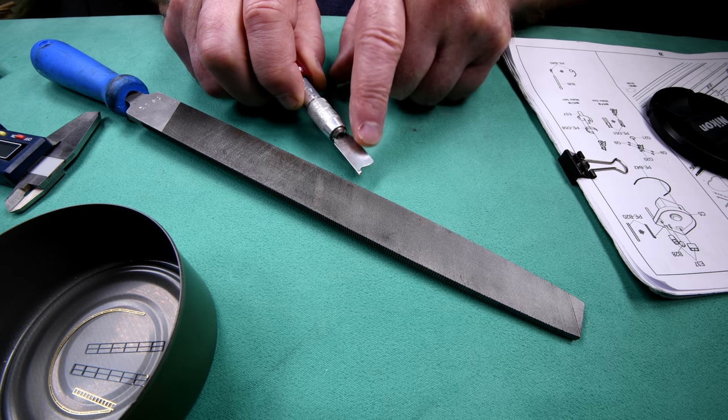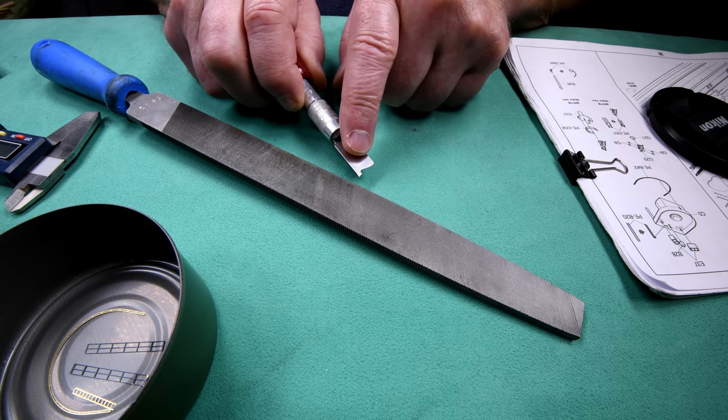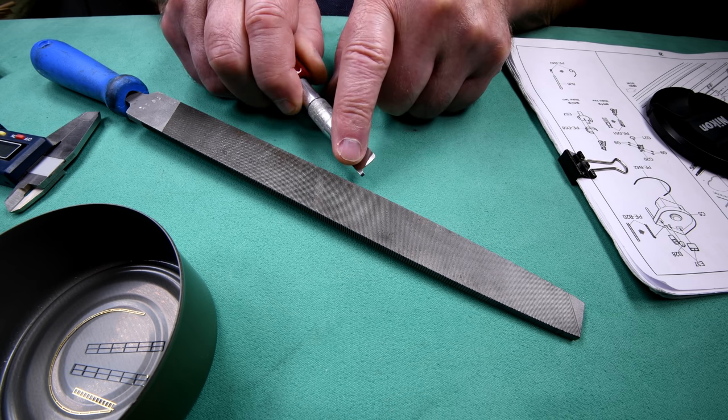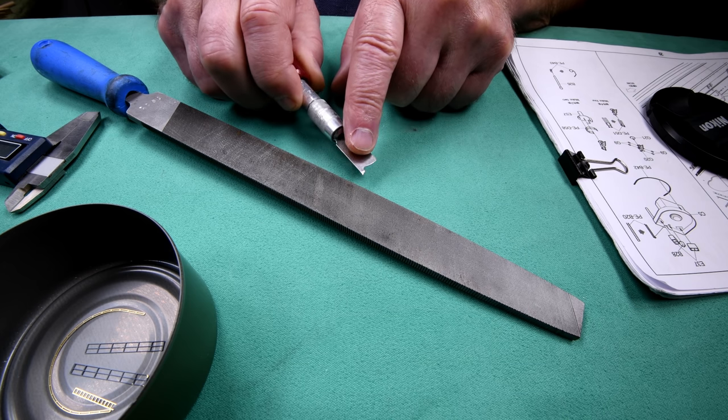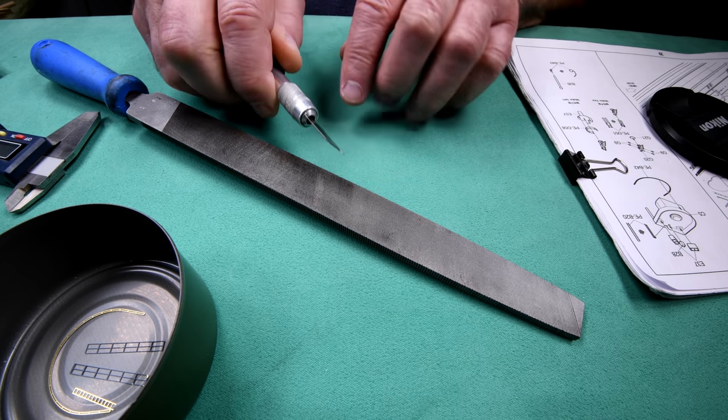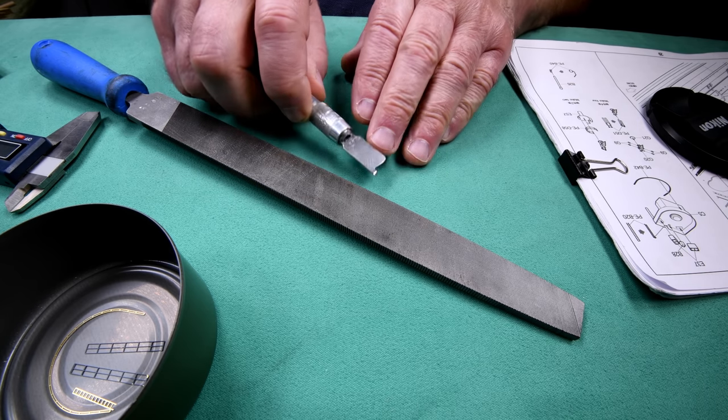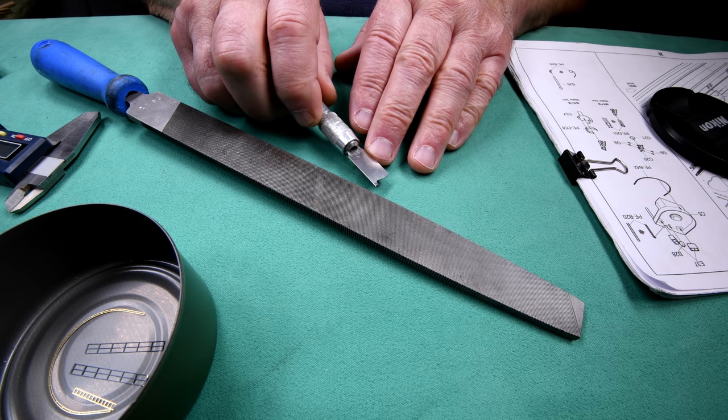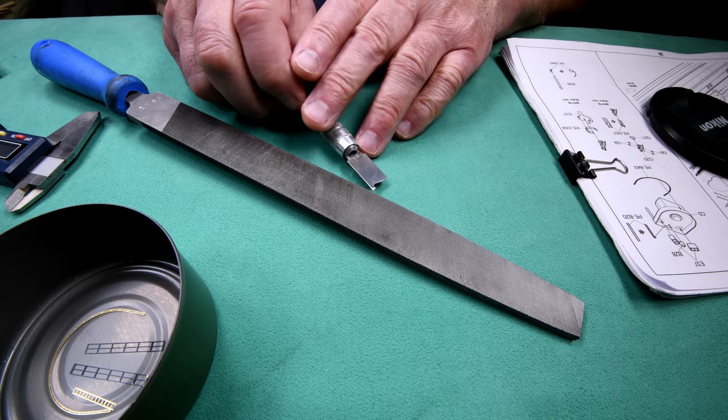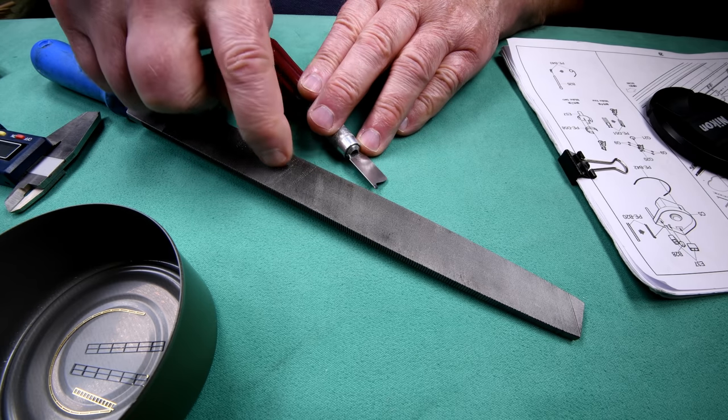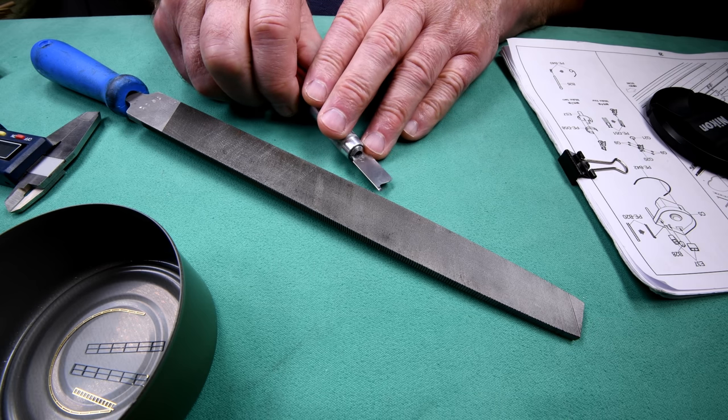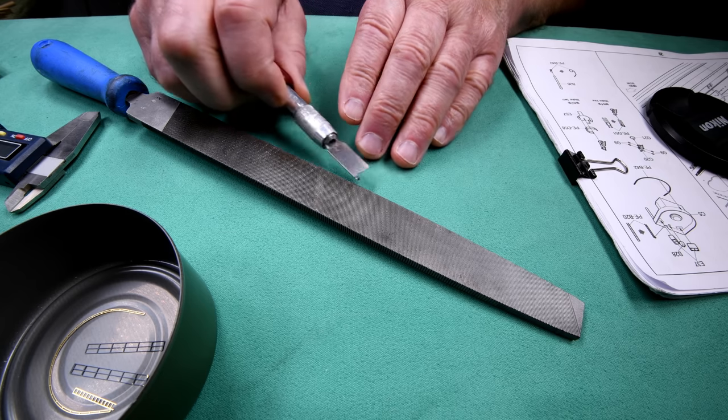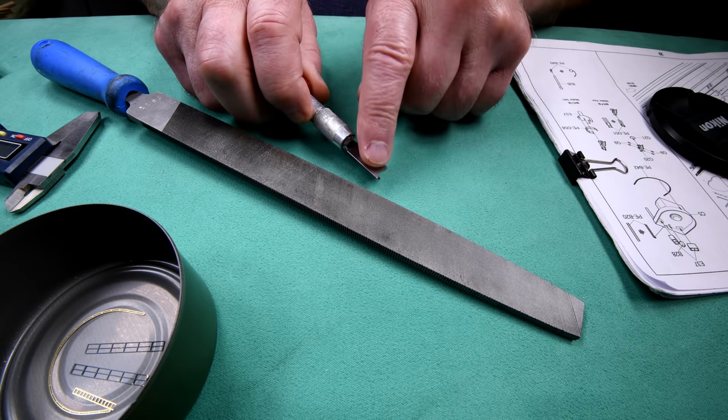I would grind for maybe two seconds, dip it in water, grind for another two seconds, dip it in water, and I probably did that 30 or 40 times to get it the way you see it. As near as I can tell I did not take the hardness out of the blade, or at least very little.